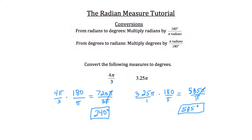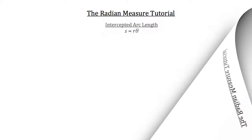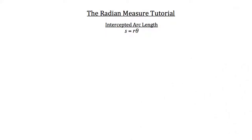Now that we've done some work converting degrees to radians and back, let's work on arc lengths. To calculate the distance of an intercepted arc length, we use s — the length of the arc — set equal to the radius times theta, where theta is the angle in standard position of that circle.